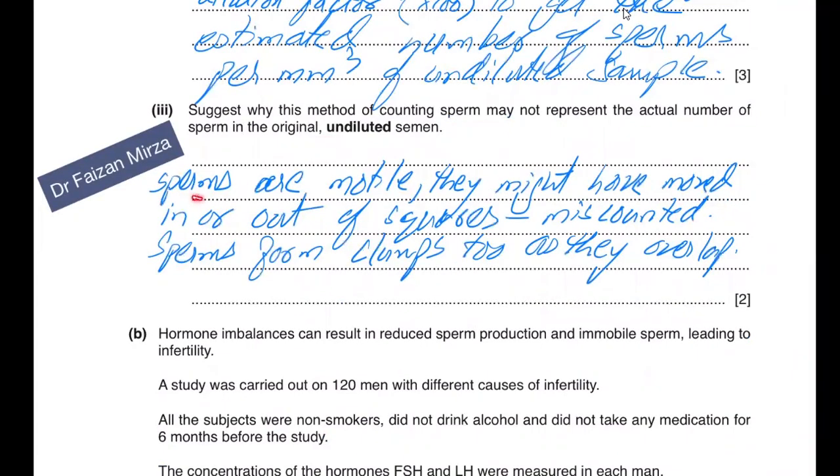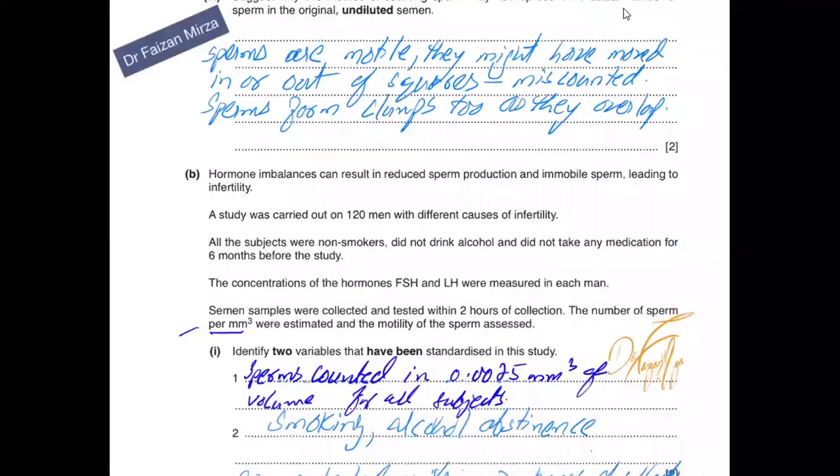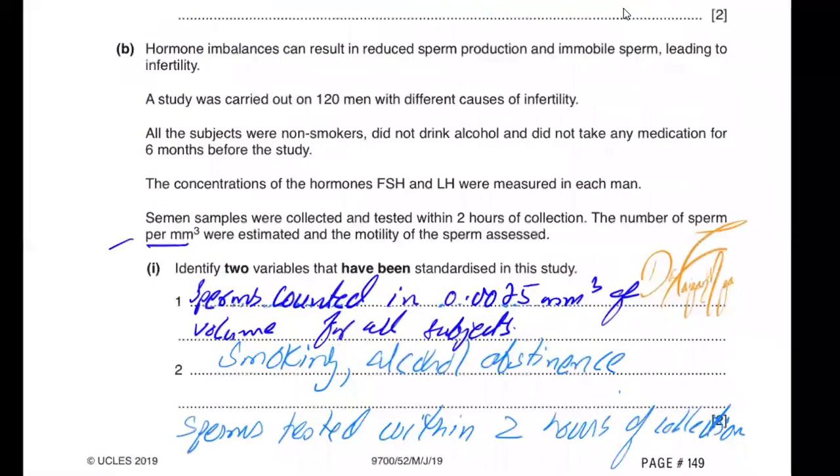Suggest why this method of counting sperm may not represent the actual number in the original undiluted sample. The sperm are motile and might have moved in or out of the squares, causing miscounting. They also form clumps, may overlap, and this may result in a wrong count.